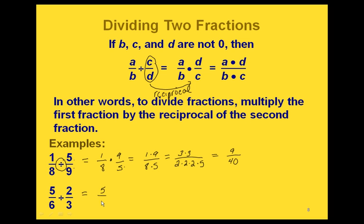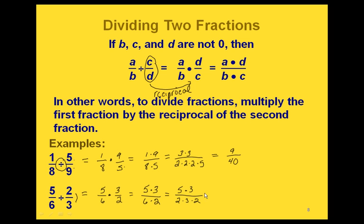For this one, our first step is to rewrite as multiplication: we change the division to multiplication and flip over the second fraction. This turns it into 5 sixths times 3 halves, giving us 5 times 3 over 6 times 2. We need to factor the 6 — the prime factorization of 6 is 2 times 3 — and now we can cancel a 3, giving us 5 fourths.